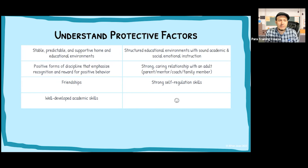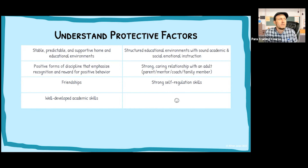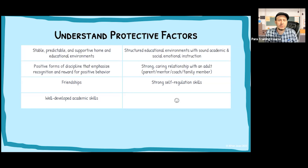On the other hand, protective factors include a stable, predictable, and supportive home and educational environment — the opposite of moving around from place to place, from school to school. If parents are not able to provide this, the continuity of care and education might be compromised. Structured educational environments with sound academic and social-emotional instruction also serve as protective factors. Social-emotional learning is not just a buzzword — it seems to be a mitigating factor.